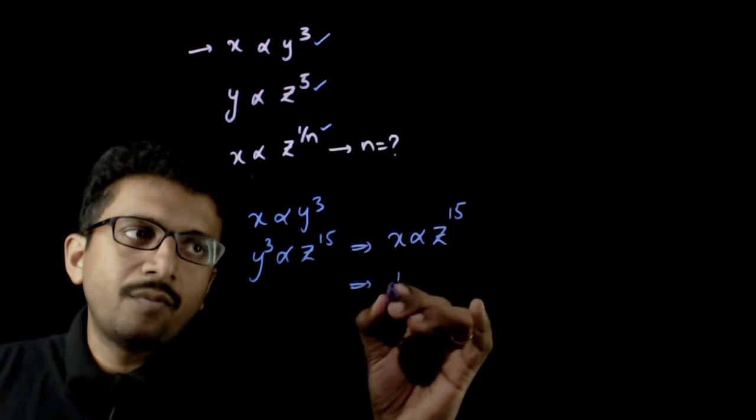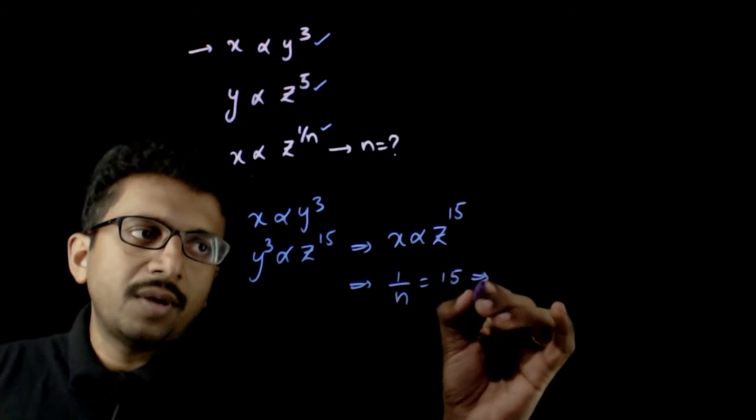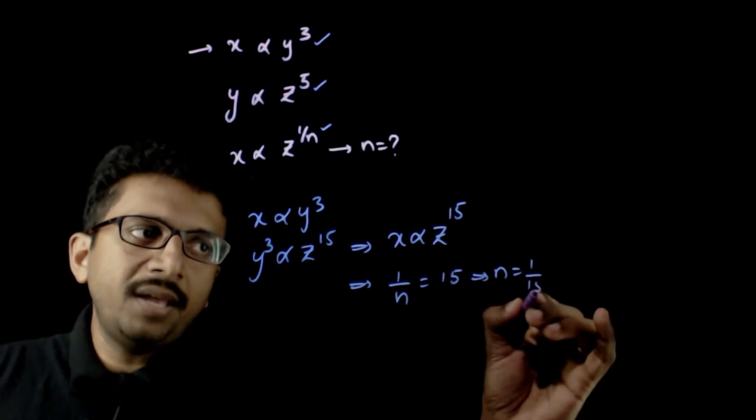This implies 1 by n is equal to 15, so n is equal to 1 by 15.